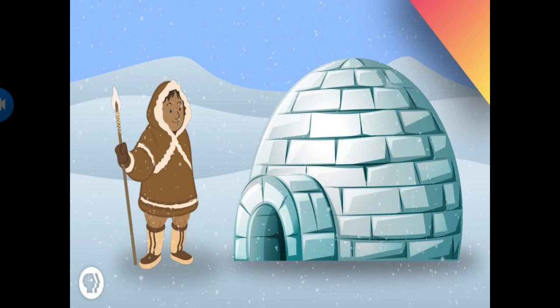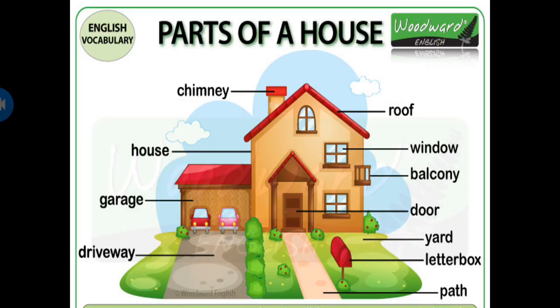So this is all about different types of houses. Now we see the parts of a house. Different materials are used to make different parts of a house. These are the different parts: a roof, window, balcony, door, walls, yard, chimney, and garage.